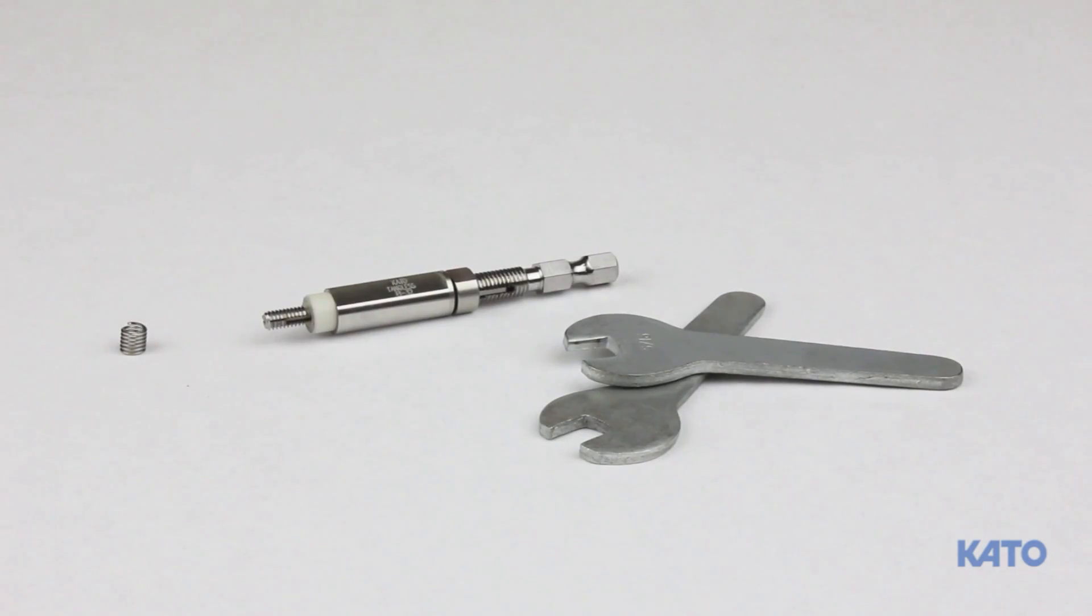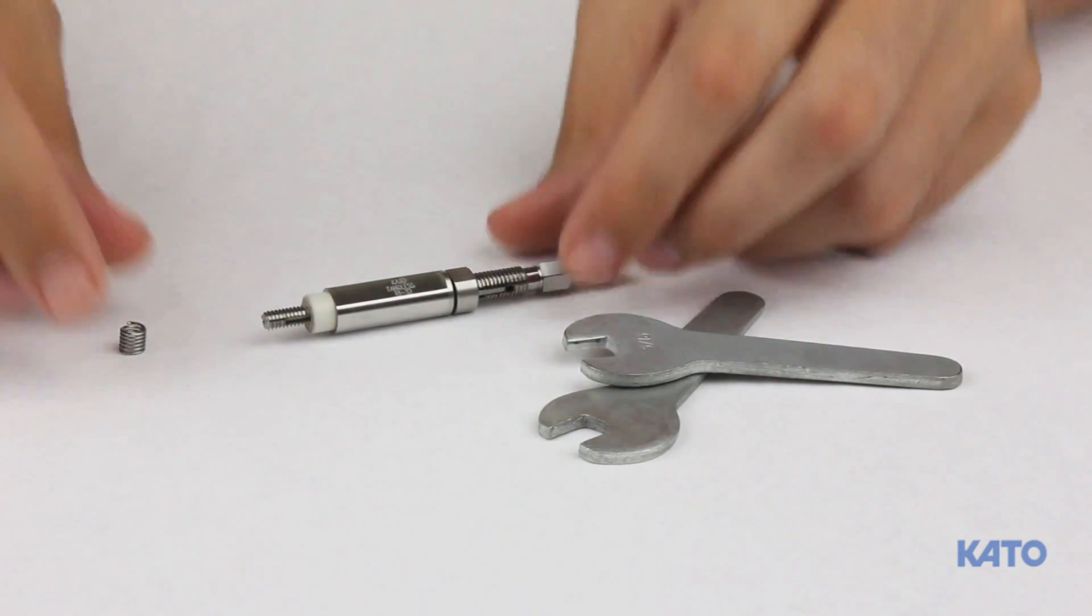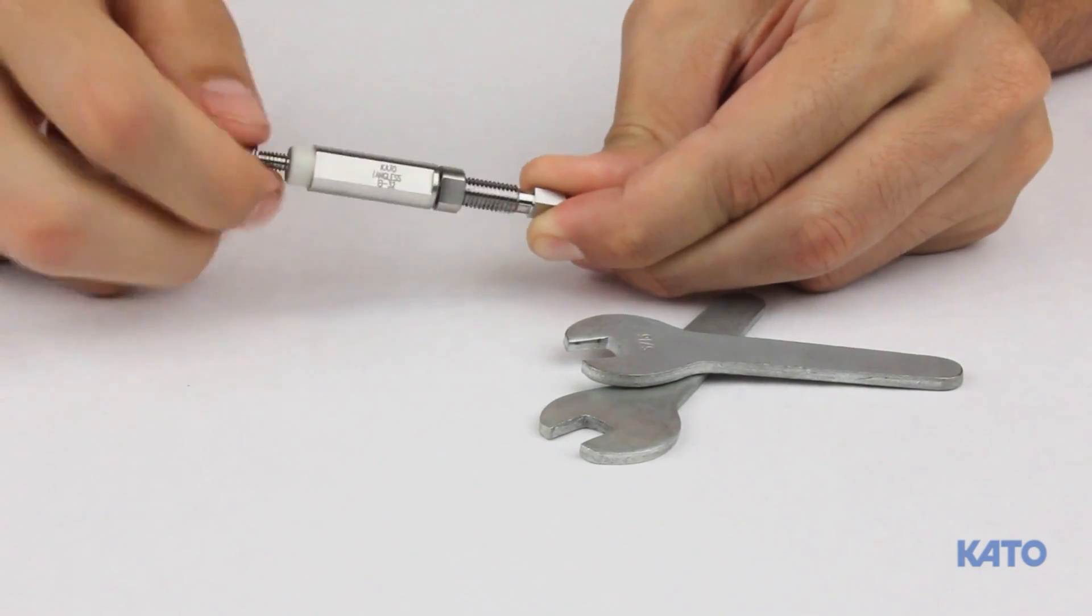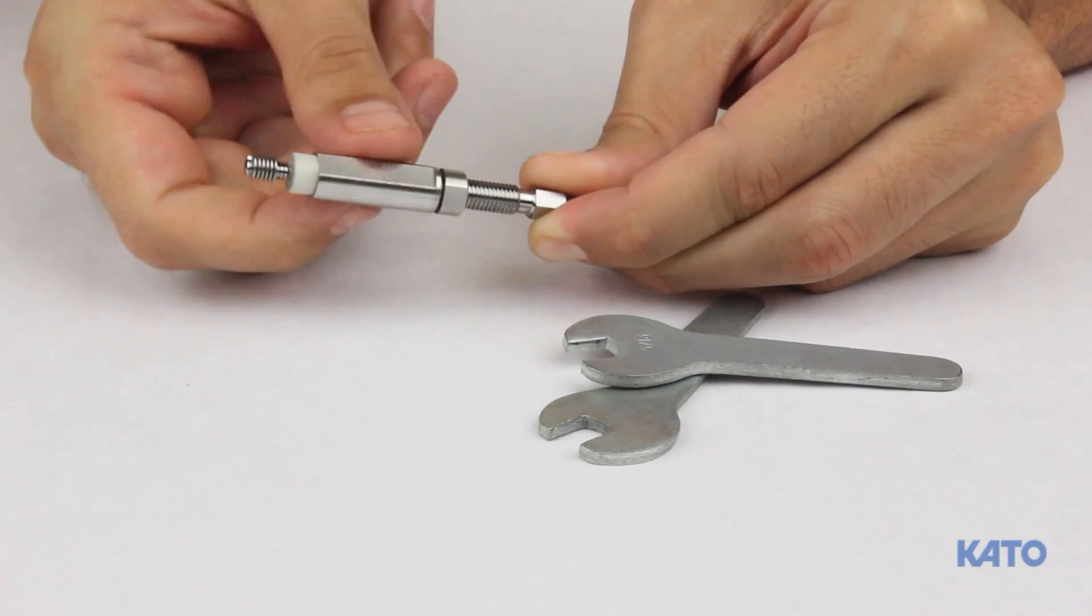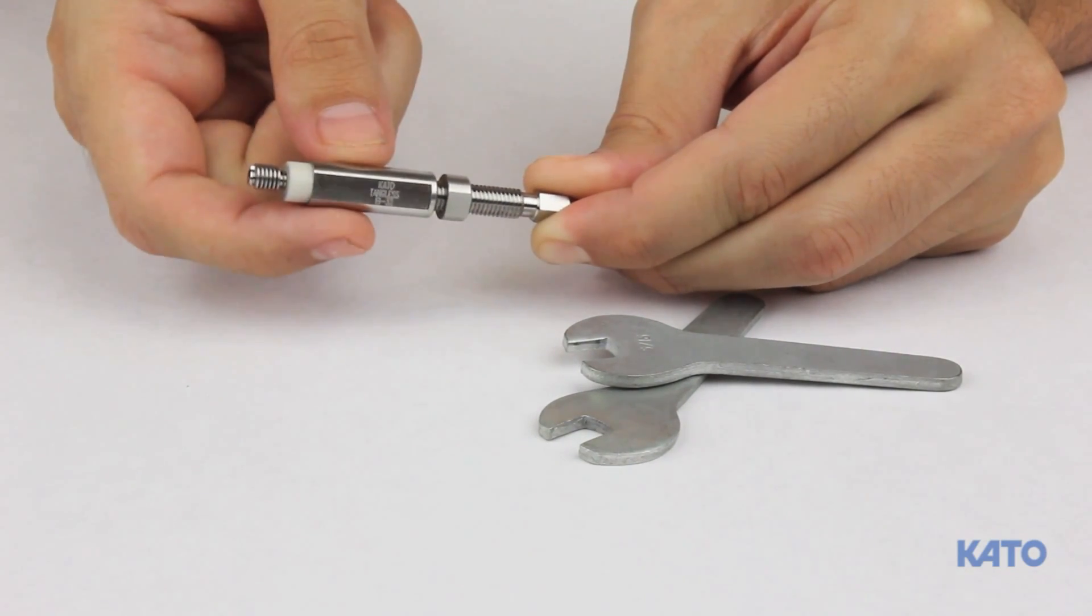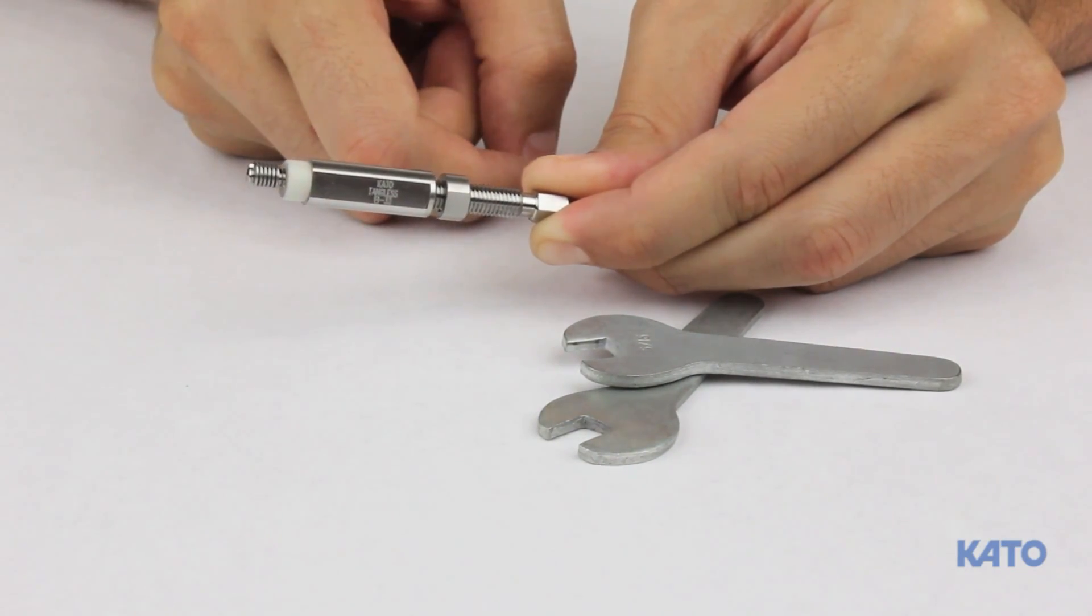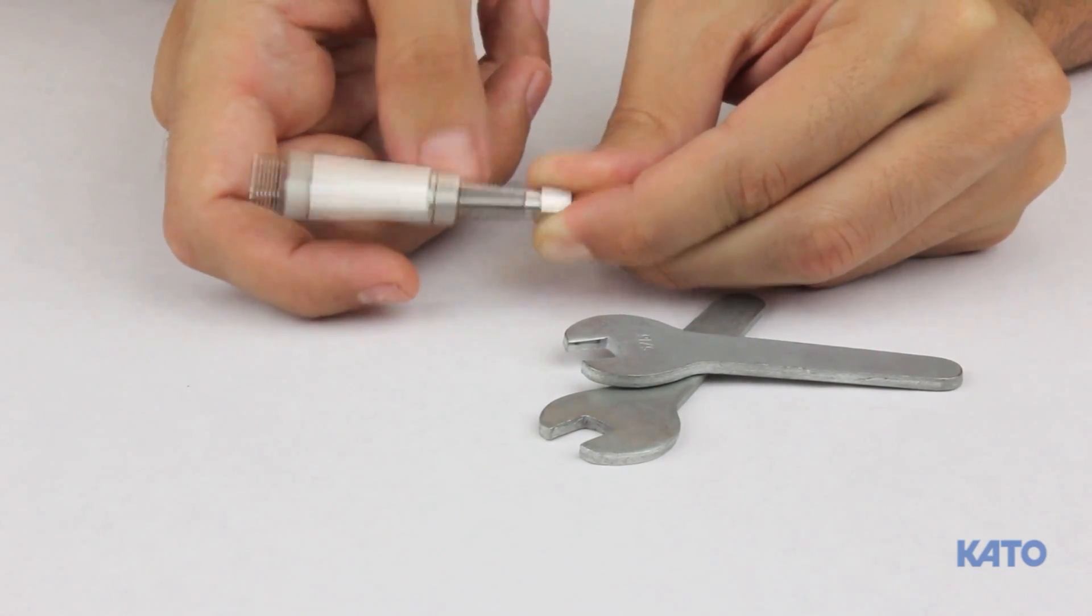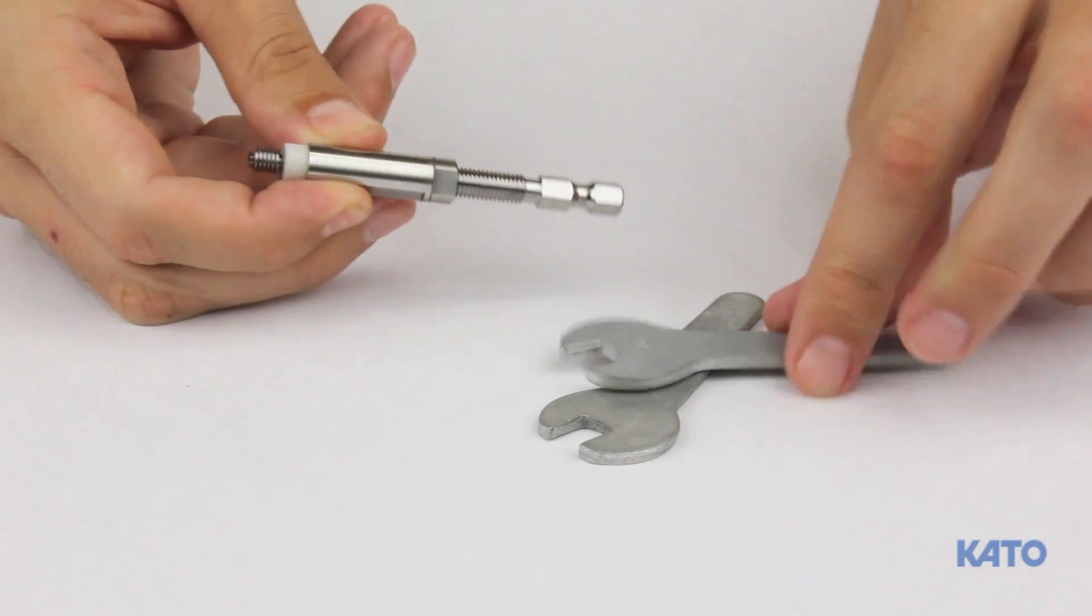Now we'll demonstrate how to set the correct installation depth using the tangless installation mandrel. The procedure is the same for tanged. Thread the insert all the way onto the mandrel until it stops. Next turn the adjusting sleeve until it is about one thread behind the last coil. And then tighten the lock nut using the wrenches that are included with the tangless tool.